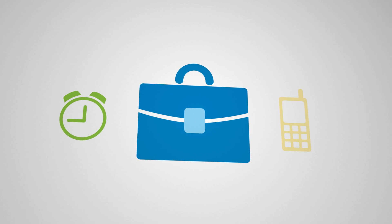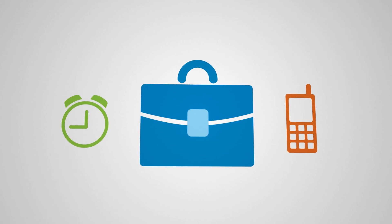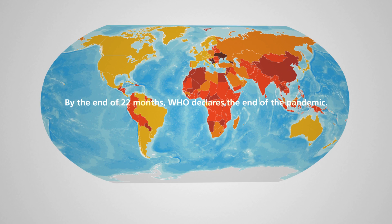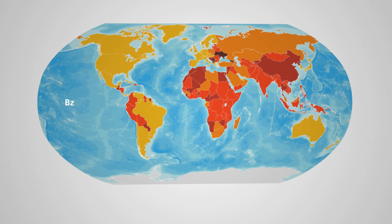At this level, workplaces are advised to consider modifying schedules and rely more heavily on telework and staggered shifts. At the end of 22 months, the World Health Organization declares the end of the pandemic.